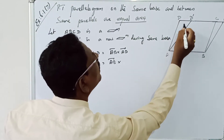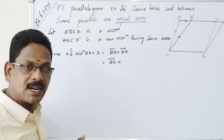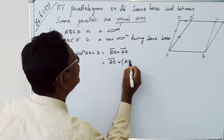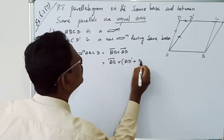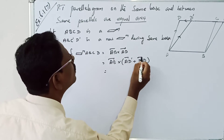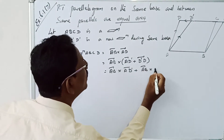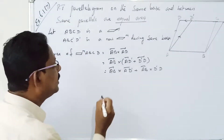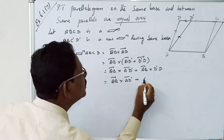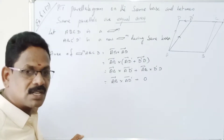Now AD: by the triangle law, AD' plus D'D is equal to AD. So you take AD = AD' plus D'D. Now cross on the other side: that is equal to AB cross AD' plus AB cross D'D.